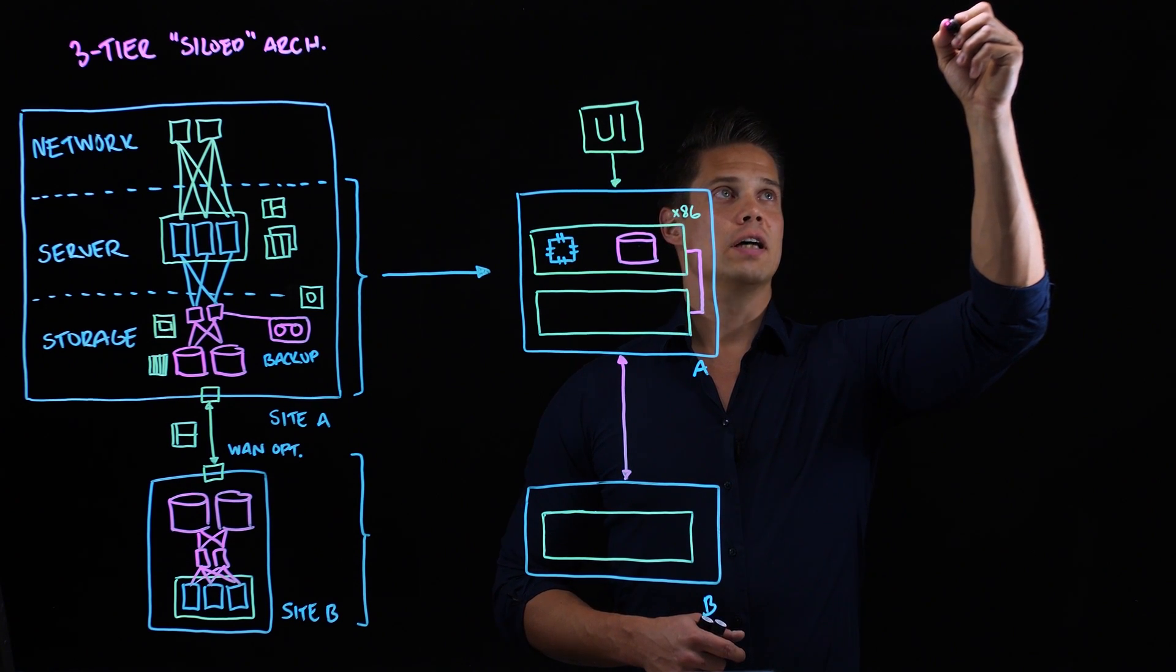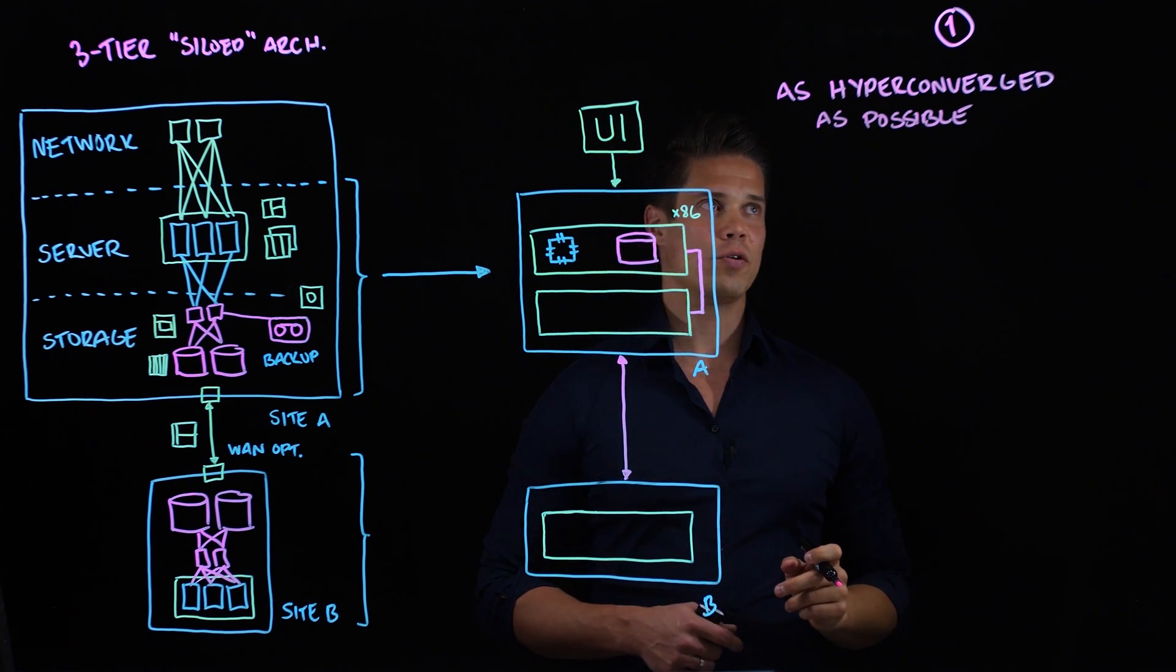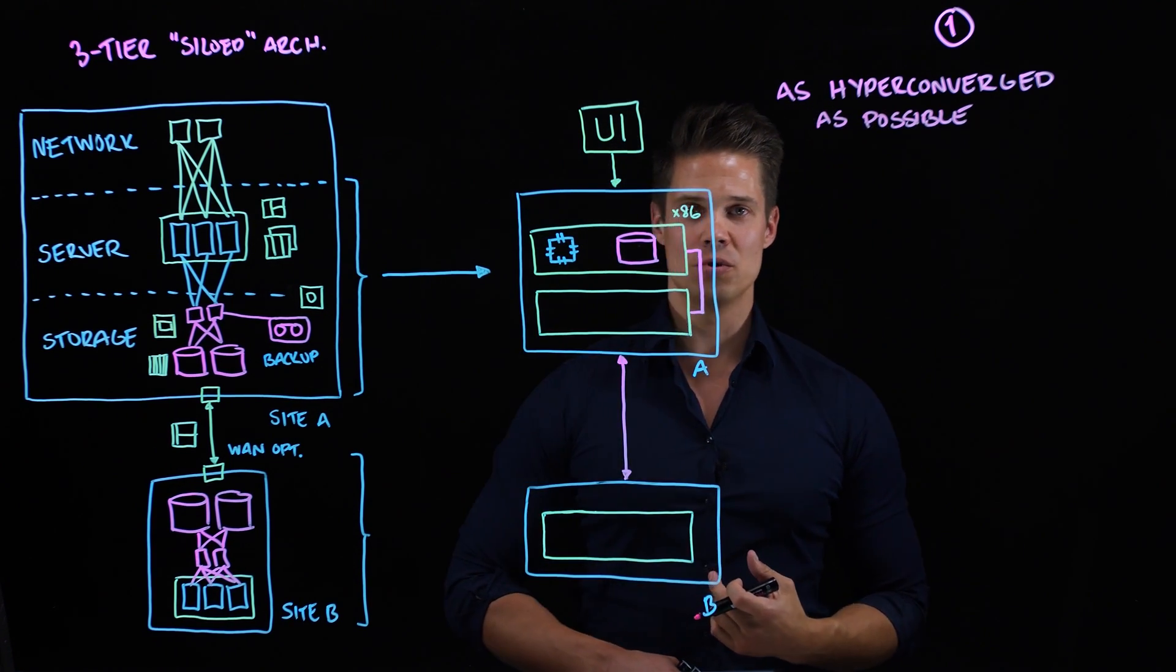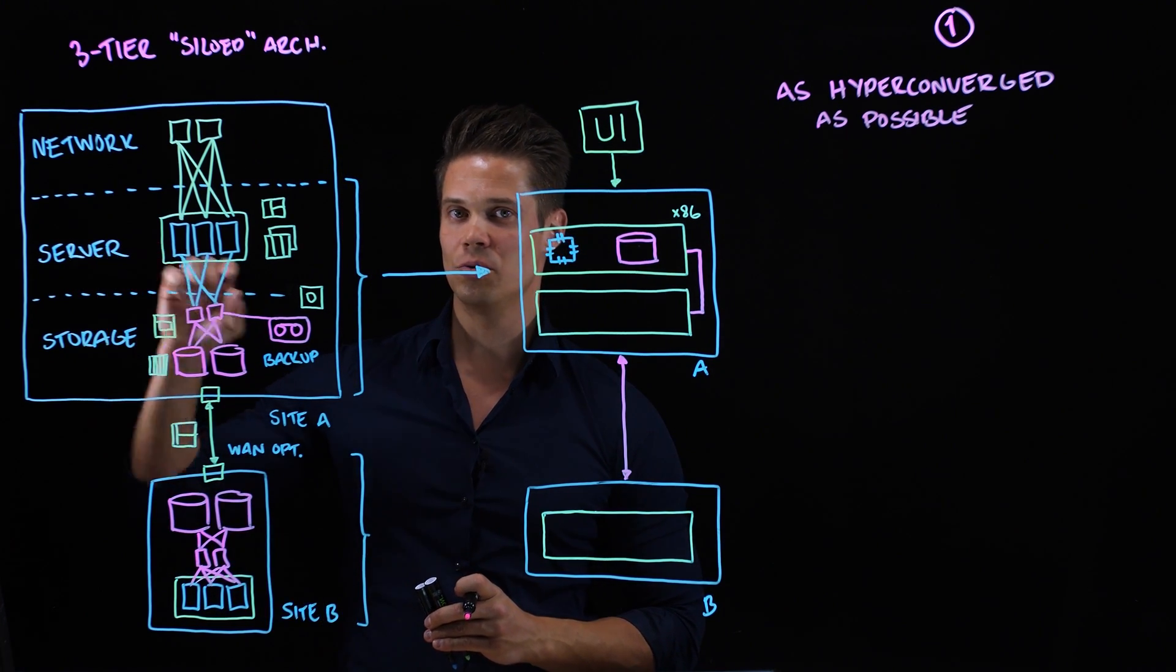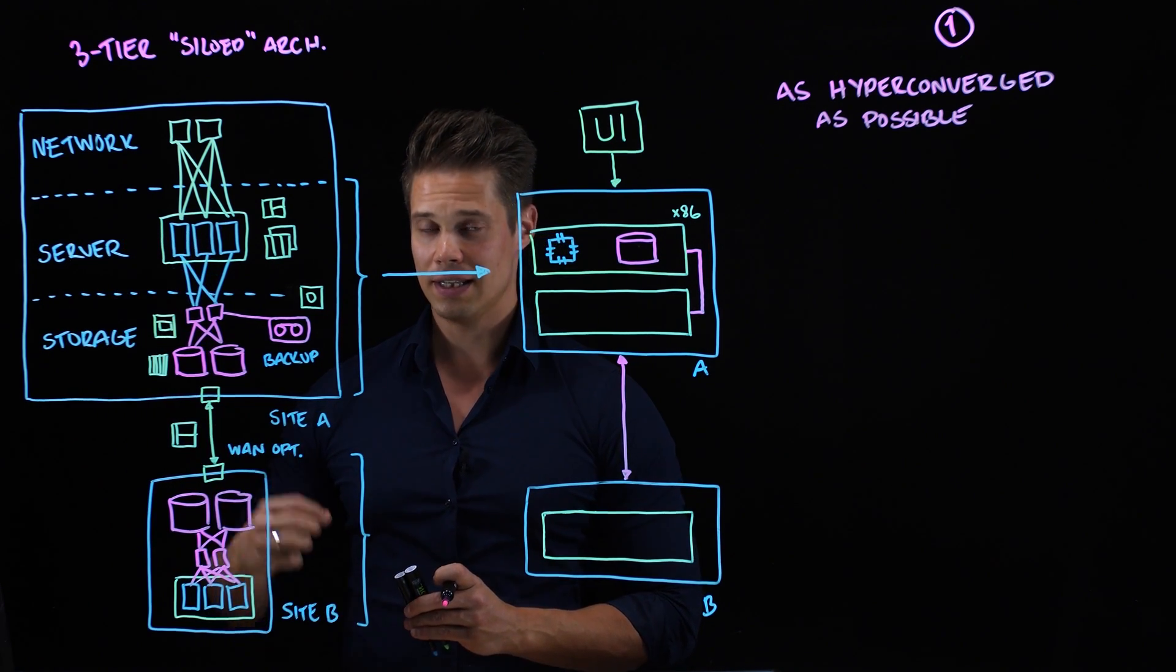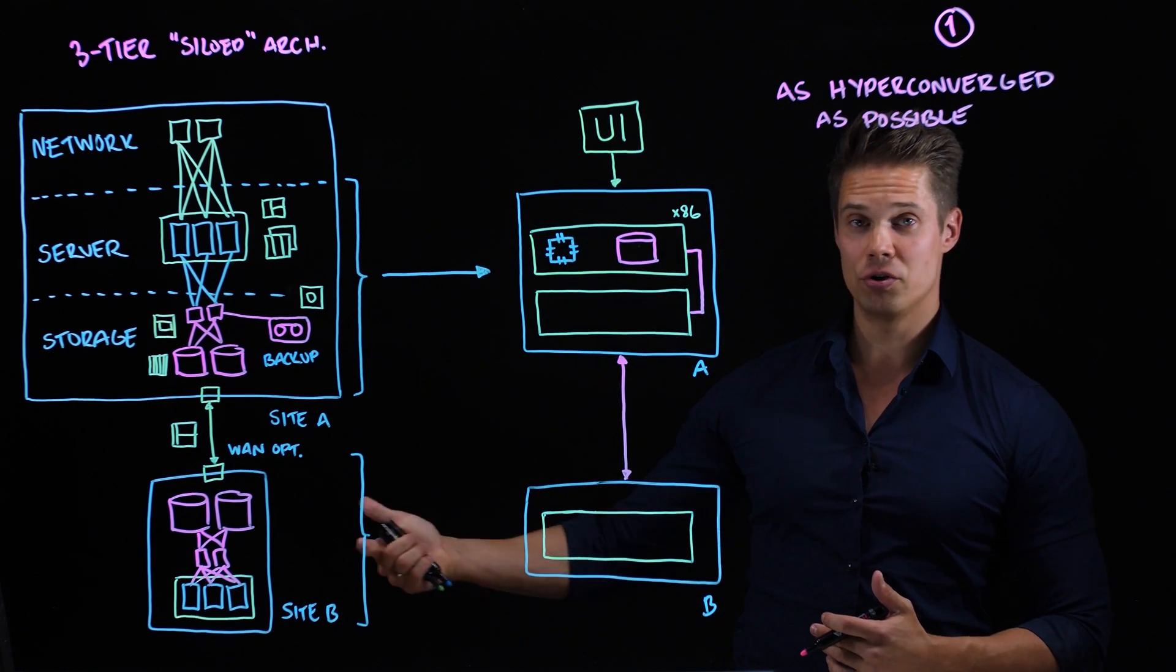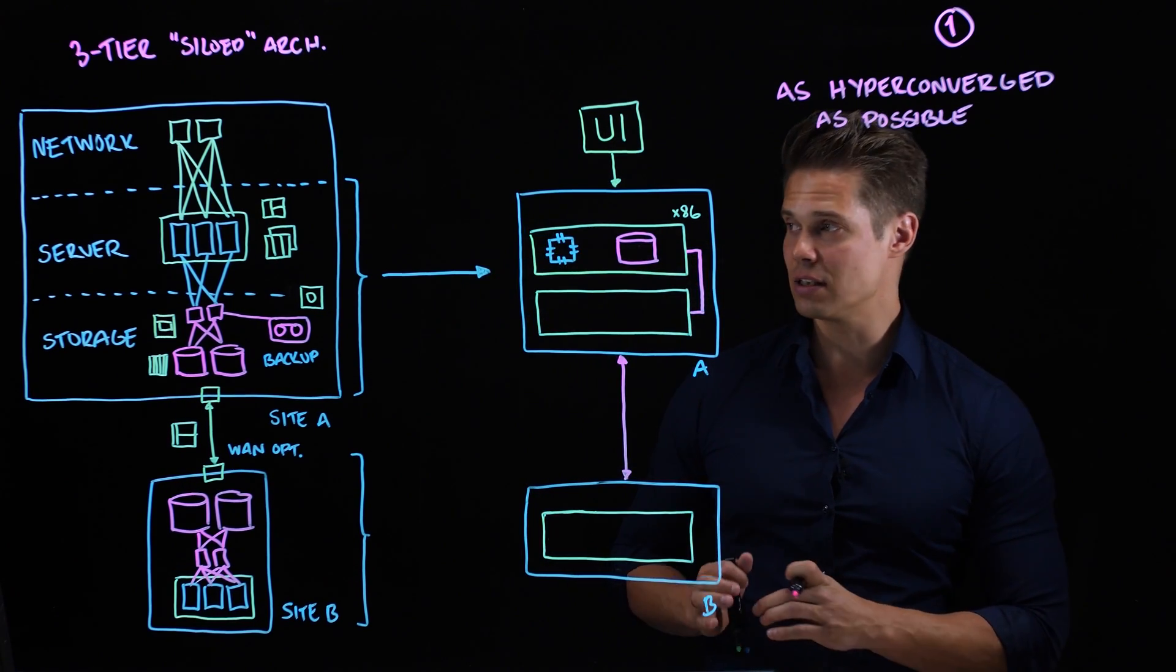The first one I want to emphasize is as hyperconverged as possible. Now, what do I mean by that? So, if you want to call yourself a hyperconverged solution, the minimum, the bare minimum requirement is to collapse these two tiers. You have to get rid of separate server tier and separate storage tier. That's the bare minimum. However, the best hyperconverged solutions don't stop there, but they go the extra mile or two to converge as much infrastructure as possible into these tiny little appliances.